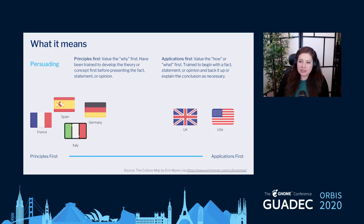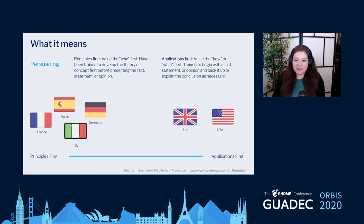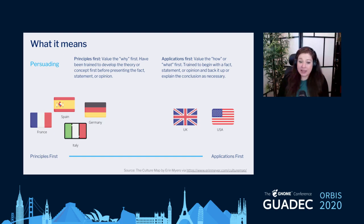With applications-first cultures, you often see executive summaries or bullet points with follow-up afterwards. The book notes there's often friction — for example, if someone from France is managed by someone in the US and constantly asked to do things without being given the 'why,' it can become very frustrating. It's really important to understand these cultural differences in order to adapt your messaging to the person you're speaking to.